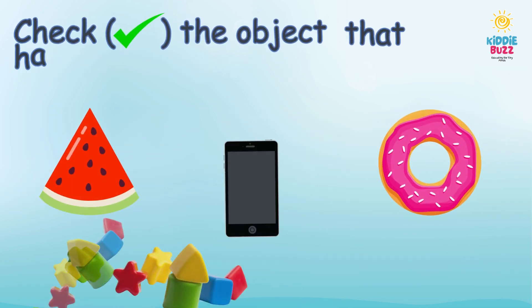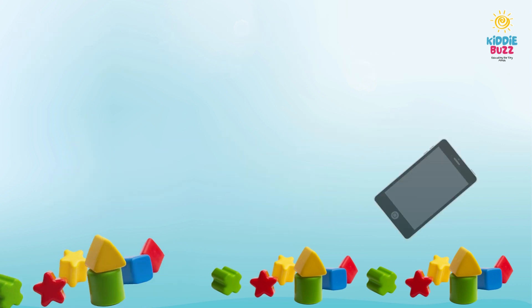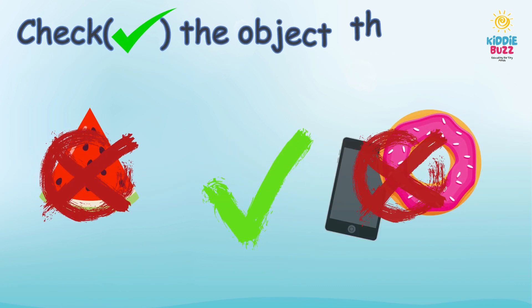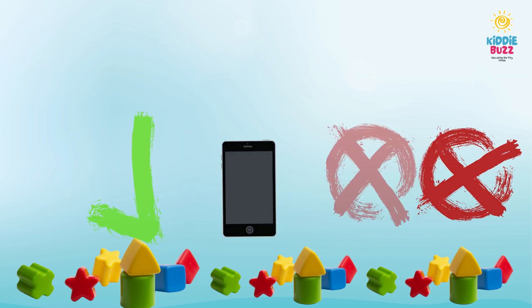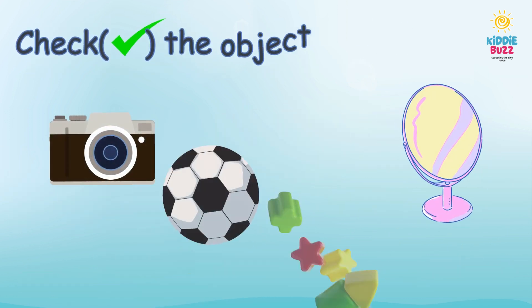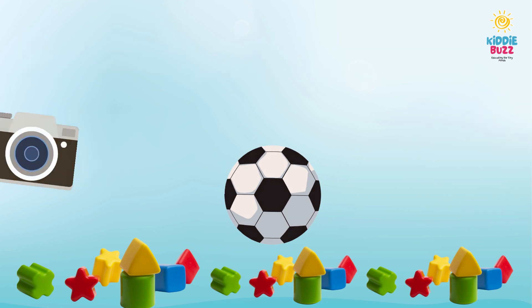Now check the object that has a shape of a rectangle. It's a mobile phone. Check the object that has a shape of an oval.